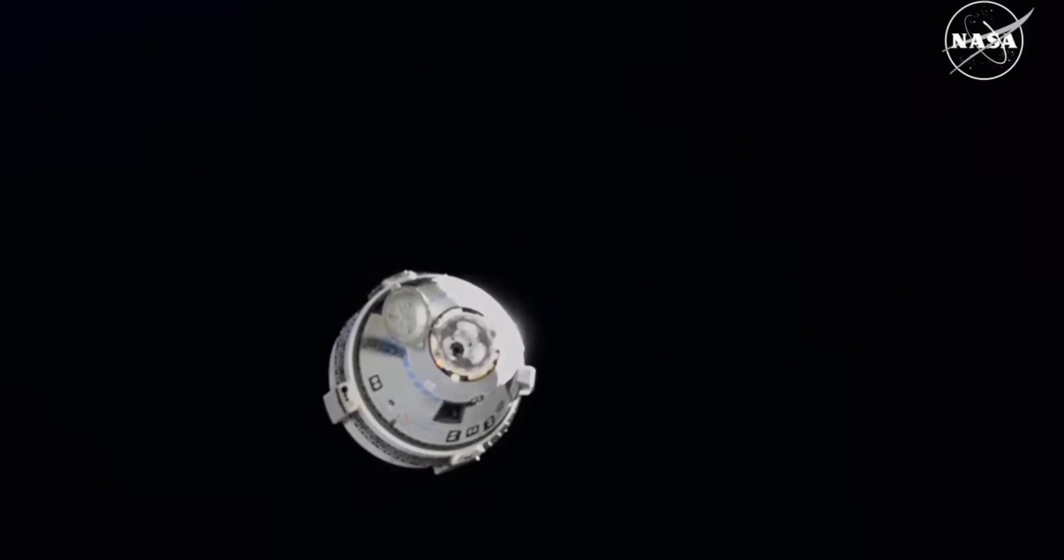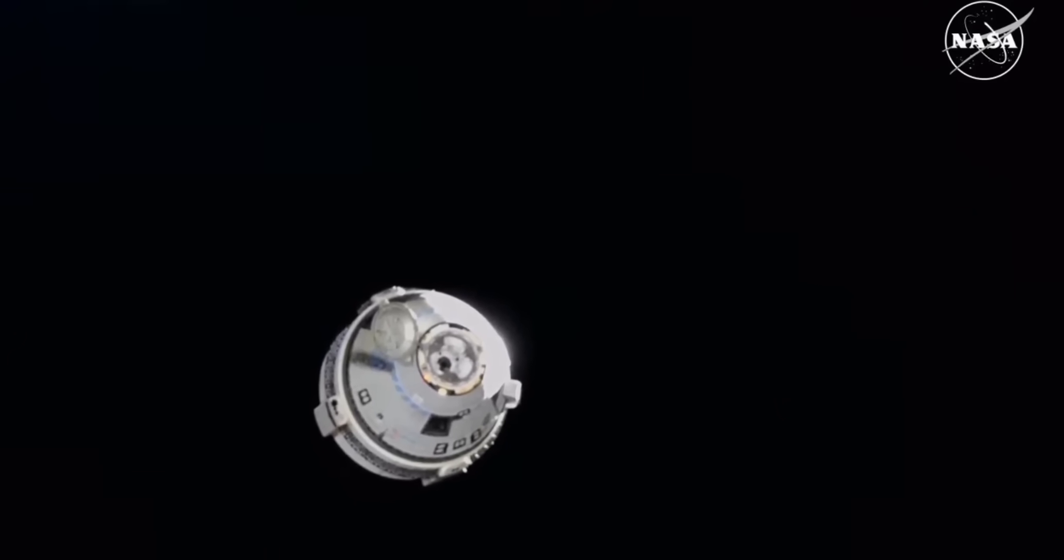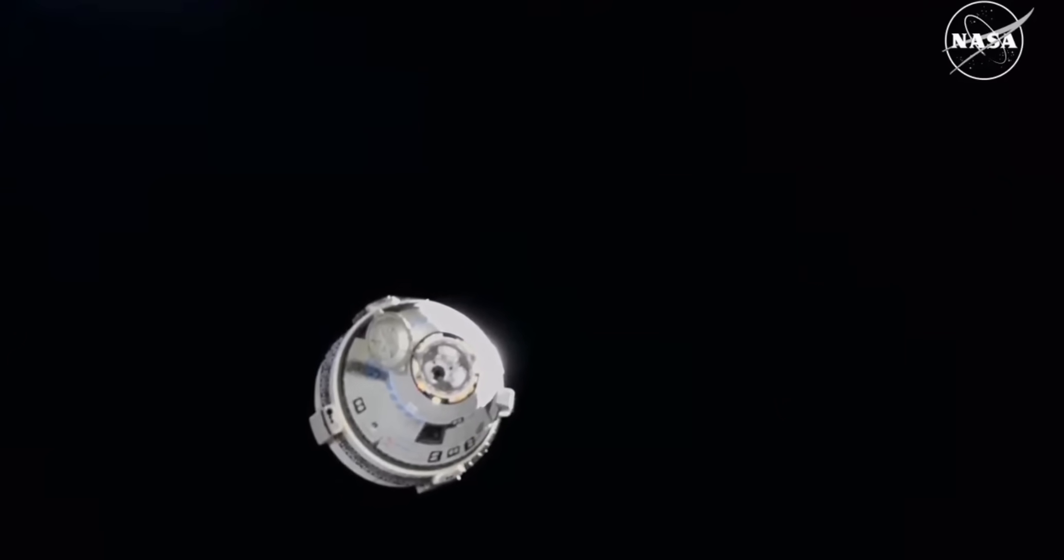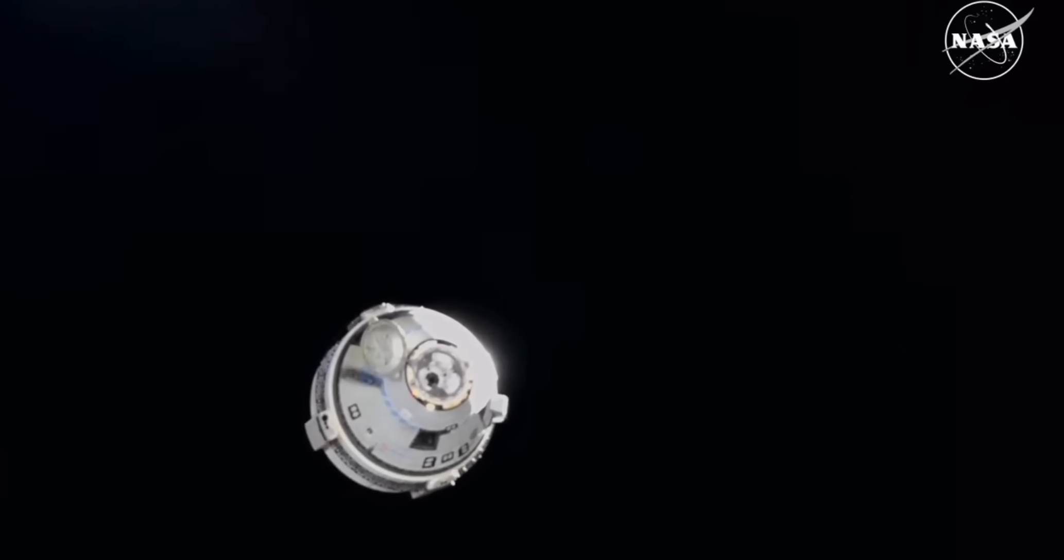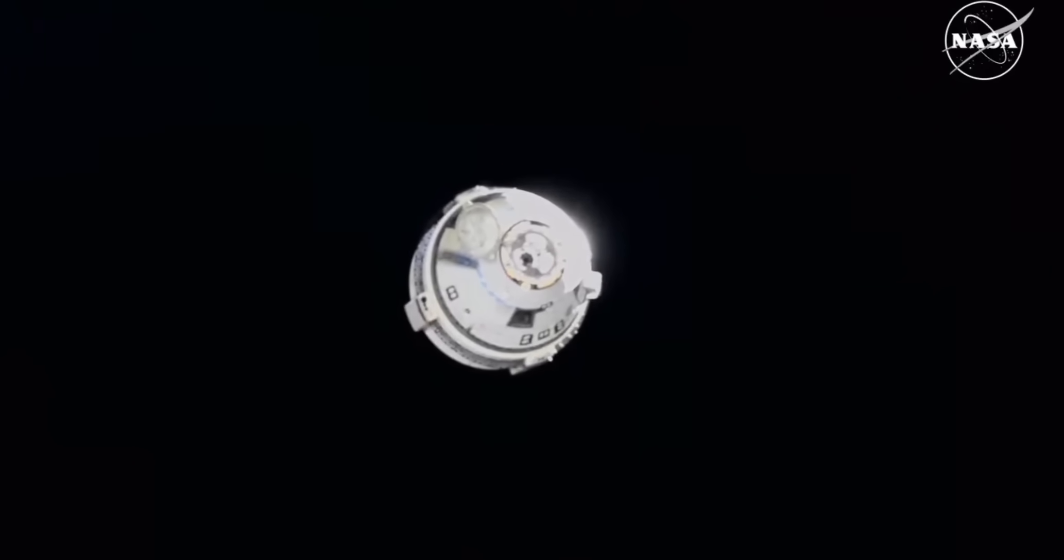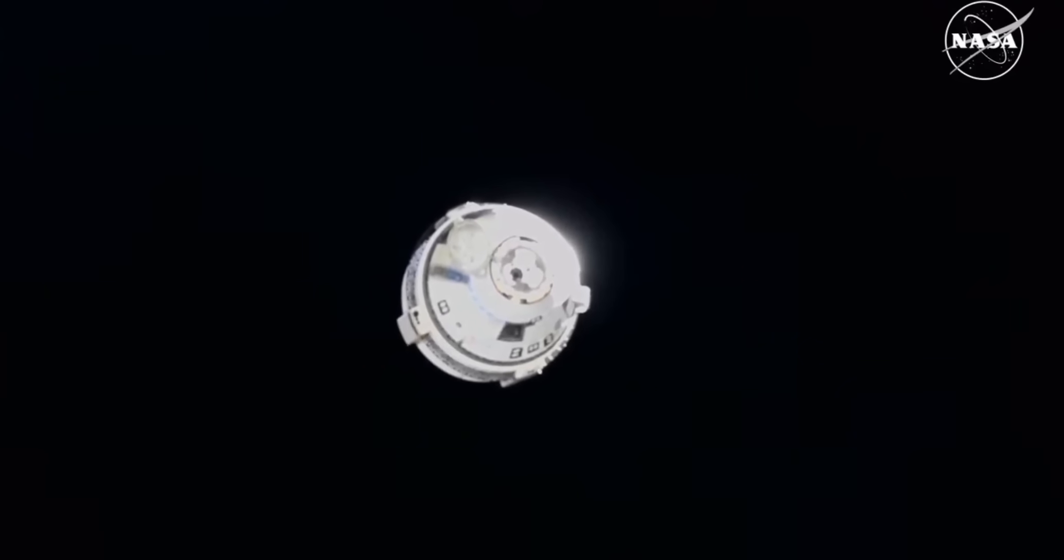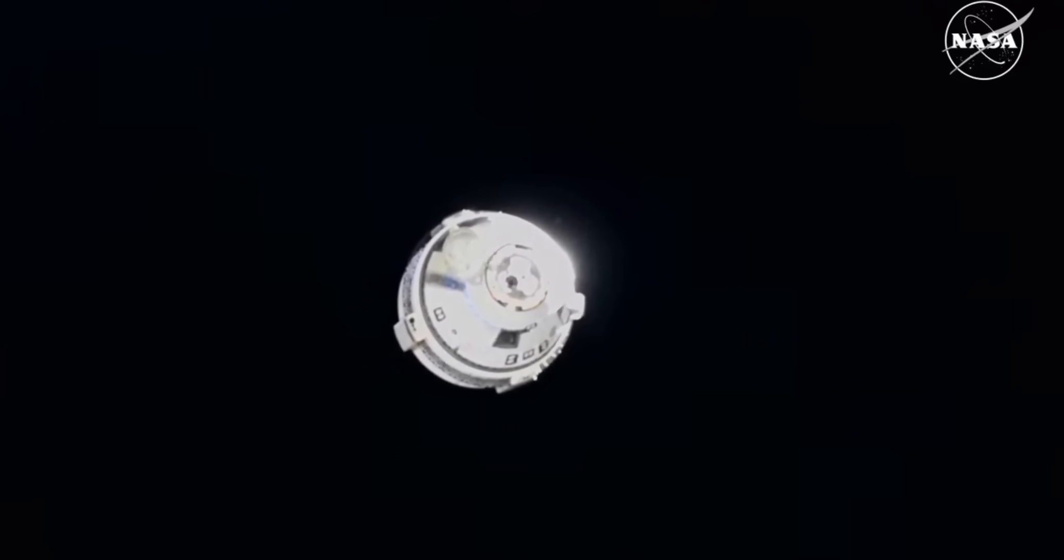As a reminder, the entire sequence will take about five minutes to complete. About four minutes into the sequence, Starliner will cross what is known as the keep-out sphere. The keep-out sphere is an imaginary 200-meter sphere centered on the space station. We are 15 seconds away from the fourth burn in the series of 12.